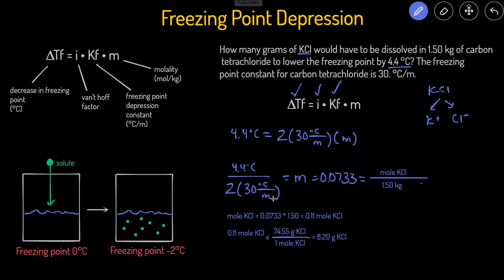And there you have two examples of freezing point depression. When you read the problem and it mentions freezing point depression, start by writing the equation out, then think about which variables are already given and which ones you're solving for. If you want to learn how to ace chemistry — tips, tricks, and study strategies — head over to my website and get the free guide '12 Secrets to Ace Chemistry' at www.conquerchemistry.com/chemsecrets. I'll include a link in the description. Keep working hard and continue the good work.